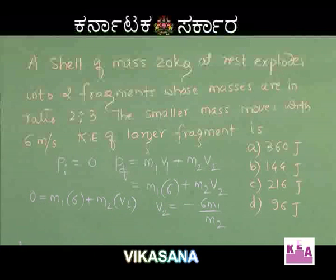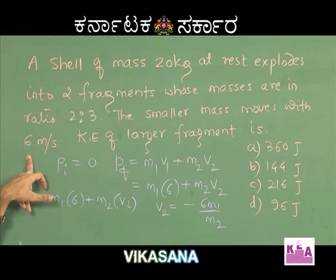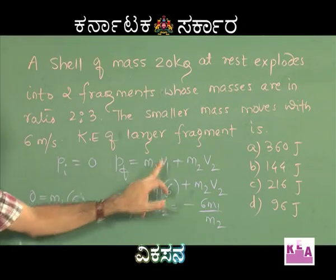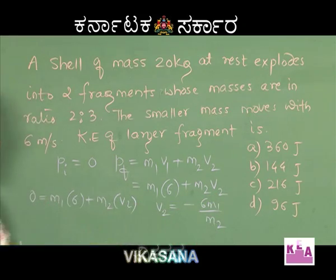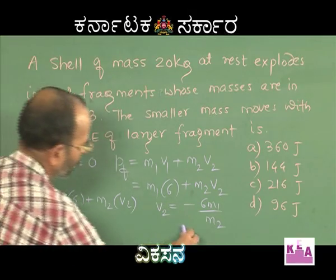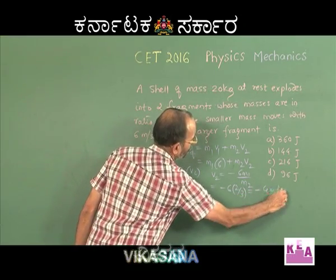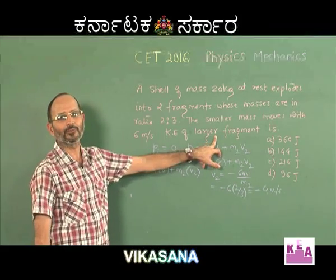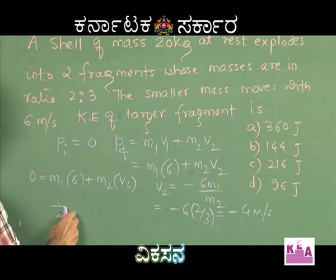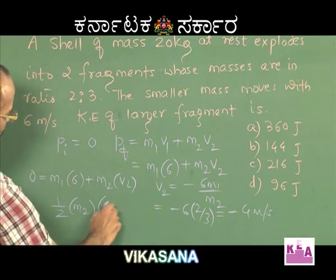The negative sign means the larger fragment moves in the direction opposite to the smaller mass, which makes physical sense. The velocity magnitude of the larger fragment is 4 meters per second. Now we calculate its kinetic energy using the formula half mv squared. With m1 + m2 = 20 kg and the ratio 2:3, m2 works out to 12 kg. The kinetic energy is half times 12 times 16.